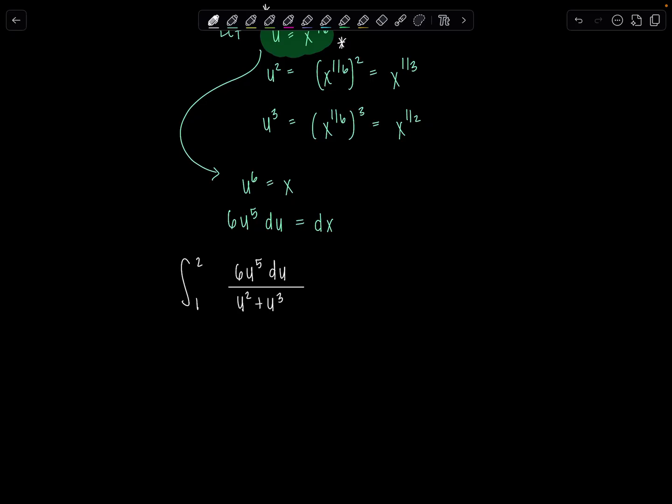Then from here, factor out a u squared from the denominator, because notice we can simplify this expression quite a bit. 1 to 2, 6u to the 5th du over u squared times 1 plus u. And then we can cancel the u squared, cancel in the numerator, that'll just be a 3 now. So we've got integral from 1 to 2, 6u cubed over 1 plus u du.